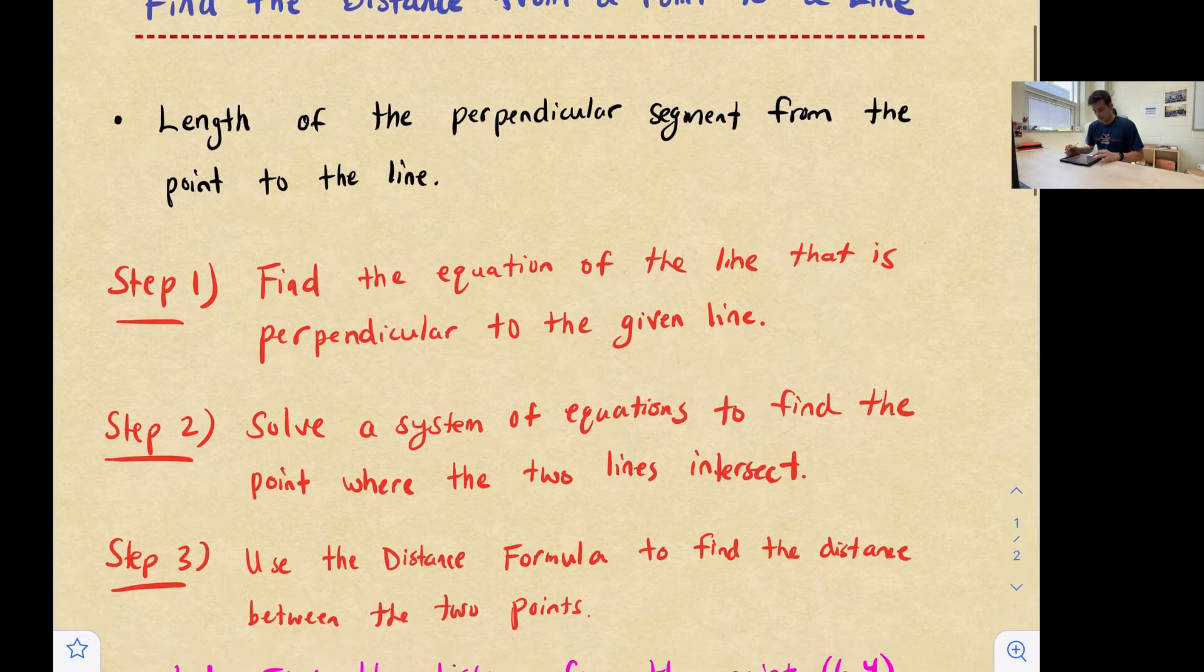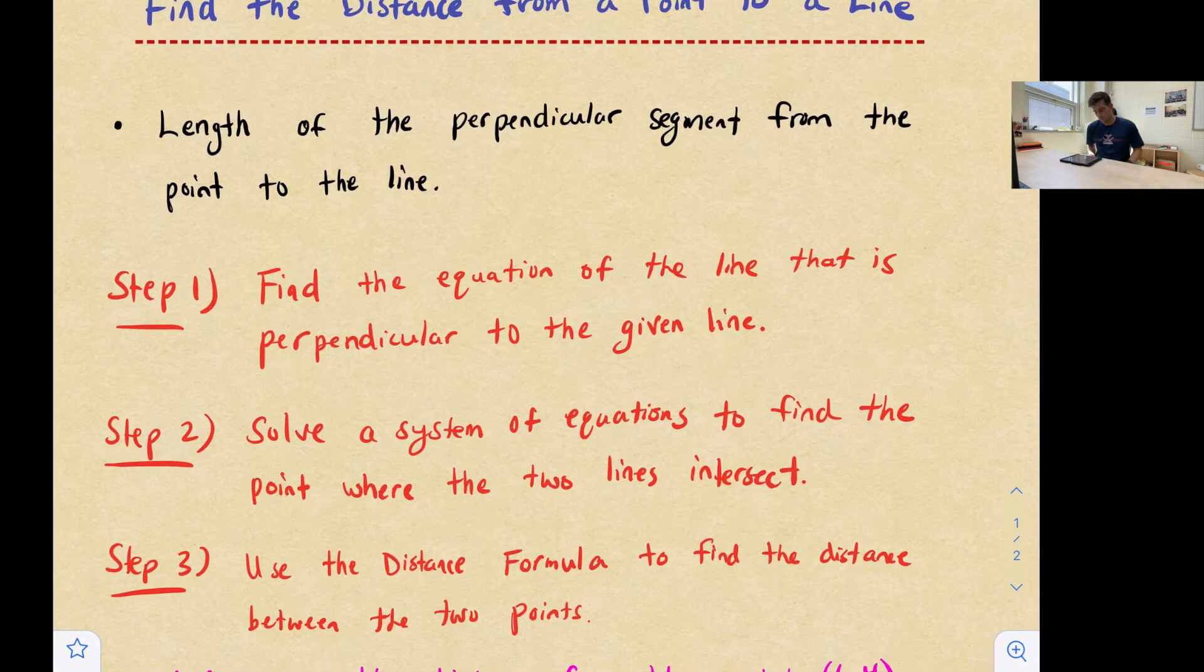So this process that we're going to look at today is a three-step process. The first thing we want to do is find the equation of the line that is perpendicular to the given line. So we're going to start with that today in step one. And then step two, we're going to solve a system of equations to find the point where the two lines intersect. And then step three, we're going to use the distance formula to find the distance between the two points.